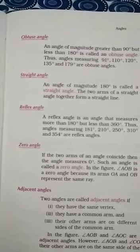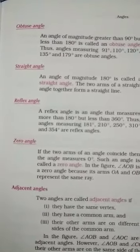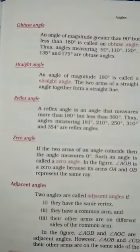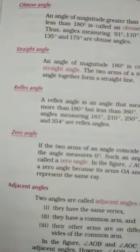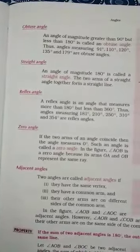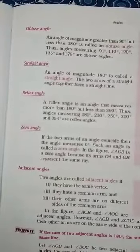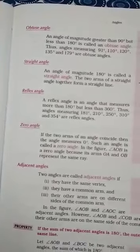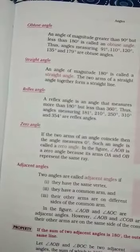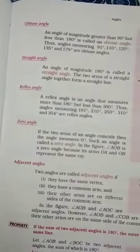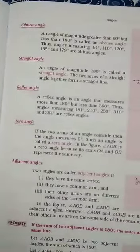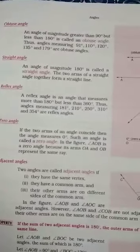Next, Straight Angle. An angle of magnitude 180 degree is called a straight angle. Next, Reflex Angle. A reflex angle is an angle that measures more than 180 degree but less than 360 degree. Next, Zero Angle. If the two arms of an angle coincide, then the angle measures 0 degree. Such an angle is called a zero angle.